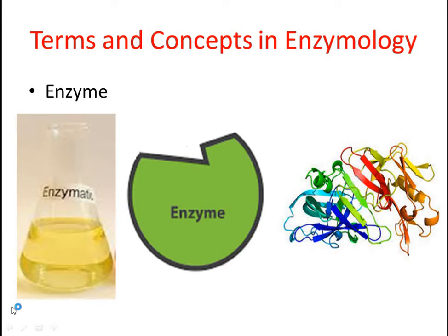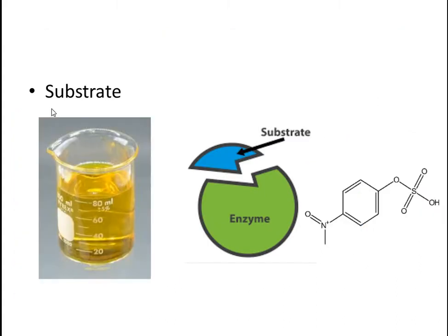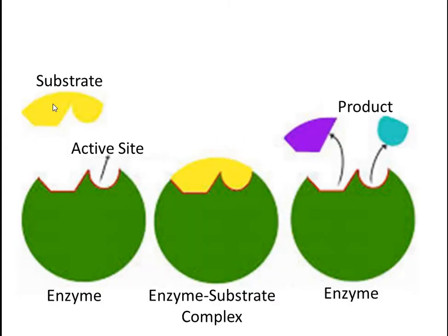We will see other terms related to enzymes. The second and most important term is substrate. Substrates are the chemical compounds or reactants which actually involve in the reaction. The change which is taking place in the reaction is in the substrate, in the reactant, and not in the enzyme. This substrate binds to the enzyme — but not randomly; there are some sites on the enzyme which are made for binding of the substrate. Only at that site, to those particular amino acids, can the substrate bind.